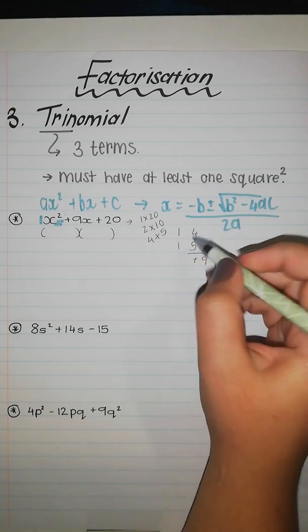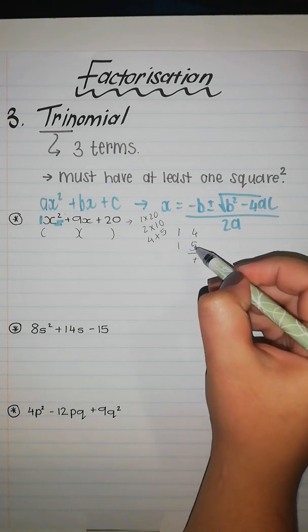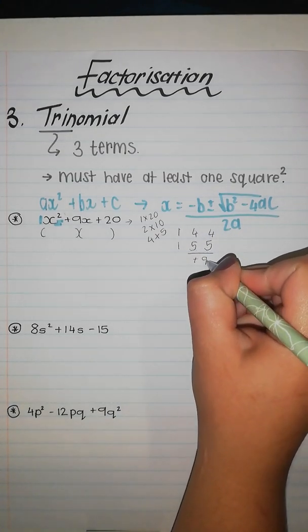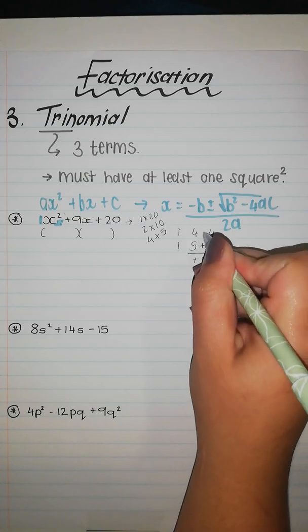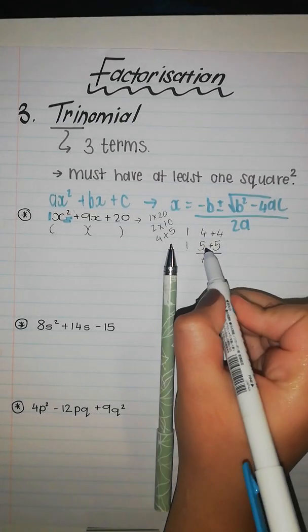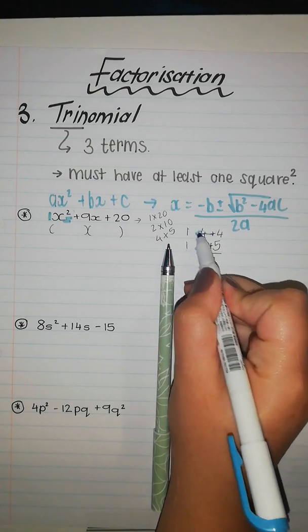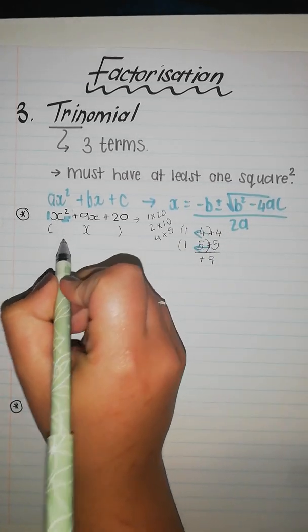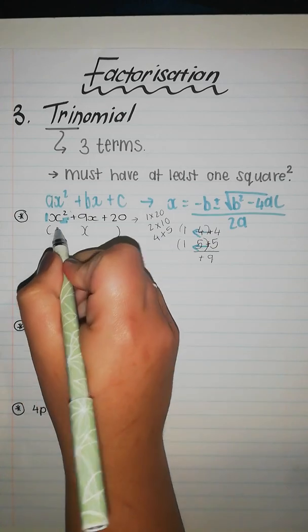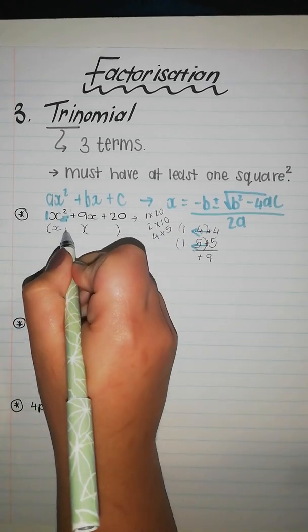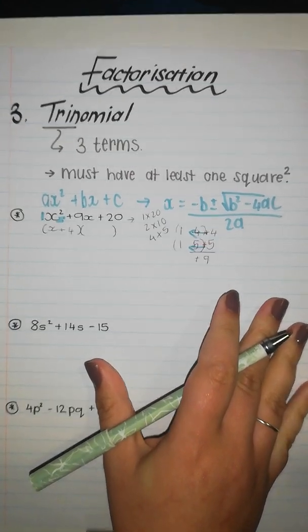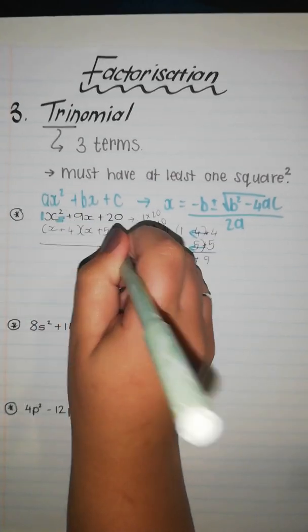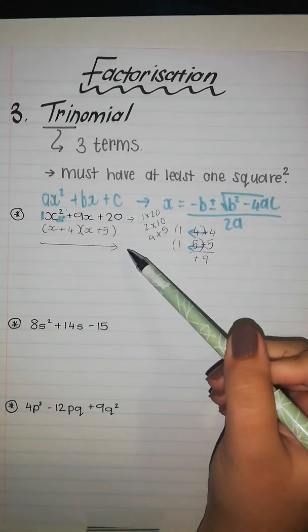So I'm gonna try 4 times 5. I cross multiply like this: 1 times 5 is 5, I'm gonna write it here, and 1 times 4 is 4. Now how am I going to get to positive 9? Both need to be positive, and whatever these signs are I'm gonna bring them over to this side. This will be my brackets. So here it will be x plus 4 and it will be x plus 5, and this will be my answer.